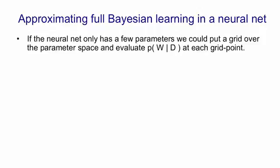And at each of those points we can see how well our model predicts the data. That is if we're doing supervised learning how well our model predicts the target outputs. And we can say that the posterior probability of that grid point is the product of how well it predicts the data, how likely it is under the prior